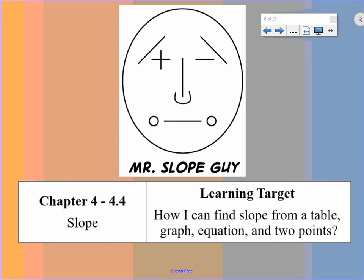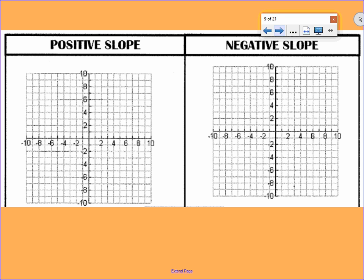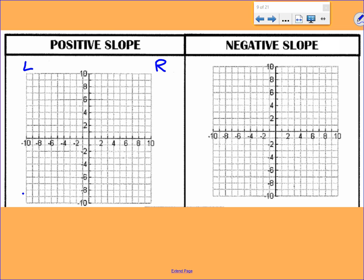Positive slope is from left to right. We're going up the mountain. Looks like that. From left to right, you're increasing. You're going up the mountain.